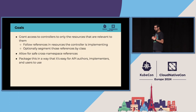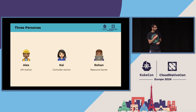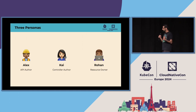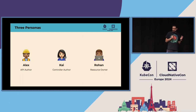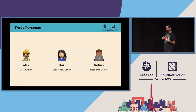We have a few personas in the APIs we're building. We have Alex, the API author — APIs in Kubernetes tend to be CRDs. We have Kai, the controller author. And we have Rohan, the resource owner. You might wonder why Alex and Kai are different individuals. In simple projects they're not — you write your own CRDs and controllers. But Gateway API is complex enough that you have reference CRDs and many, many implementations, which is why we kept these as separate personas.